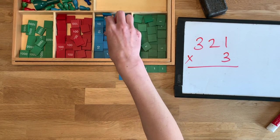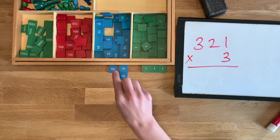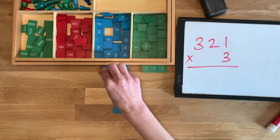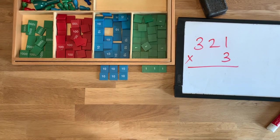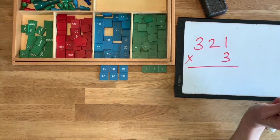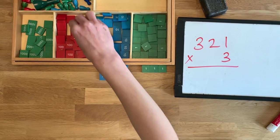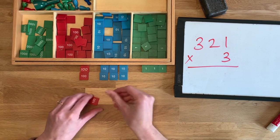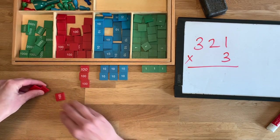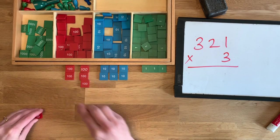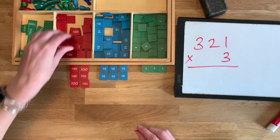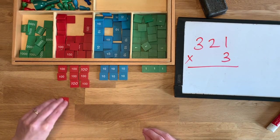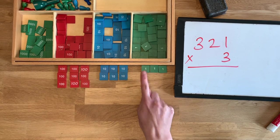Here's two tens once, here's two tens twice, here's two tens three times. I need to get three hundreds out three times: three hundreds once, three hundreds twice, three hundreds three times.